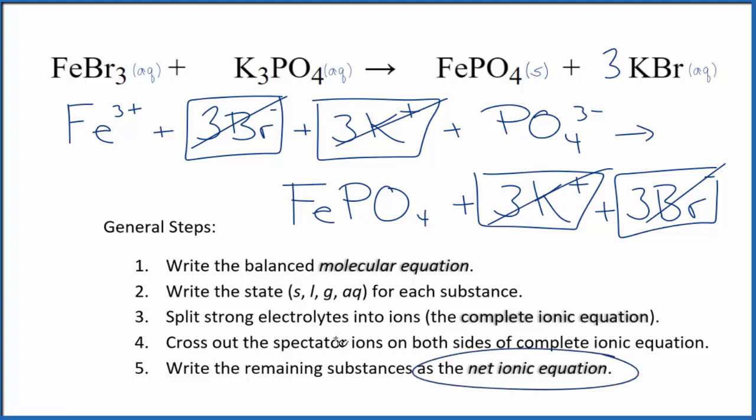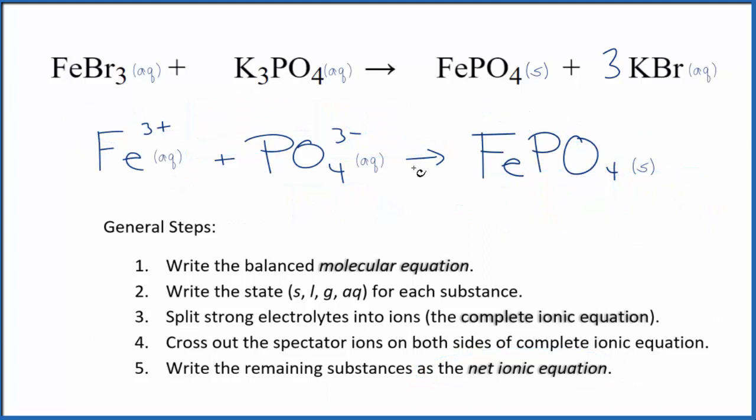What's left, that's the net ionic equation for FeBr3 plus K3PO4. I'll clean this up and write the states. We'll have our net ionic equation. So this is the net ionic equation for iron 3 bromide and potassium phosphate.